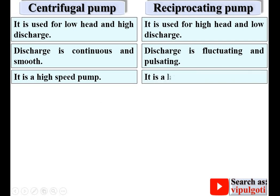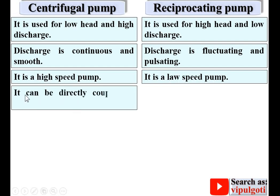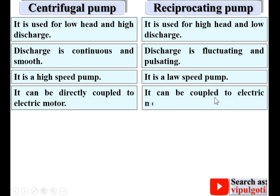Centrifugal pump is a high speed pump, while reciprocating pump is a low speed pump. In the centrifugal pump the impeller rotates, so high speed is possible, whereas in the reciprocating pump the to-and-fro motion means it cannot run at high speed. Due to high speed, the centrifugal pump can be directly coupled to an electric motor, while the reciprocating pump is coupled to the motor through a clutch.